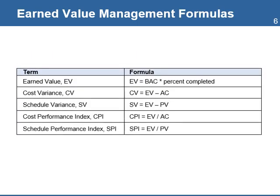To calculate the values of EVM, you can use the following formulas. Earned Value equals the total budget multiplied by the percentage of work completed at a specific time. Cost Variance equals Earned Value minus Actual Cost. Schedule Variance equals Earned Value minus Planned Value. The Cost Performance Index equals Earned Value divided by Actual Cost, and the Schedule Performance Index equals Earned Value divided by Planned Value.